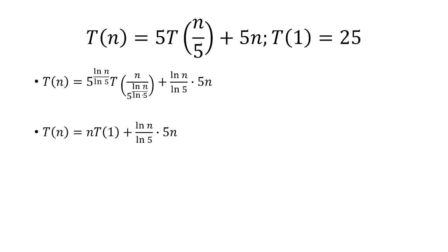So that becomes n over n which is 1, and now 5 to the ln of n over ln of 5, these two are the same which we said is n.